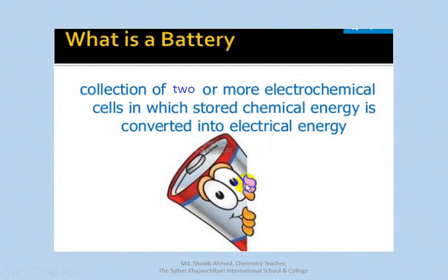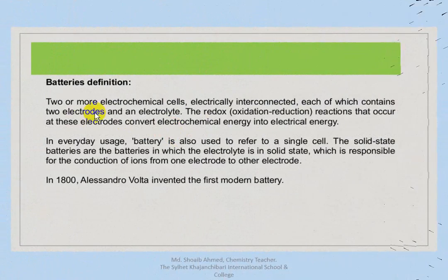First, let's look at the battery. A battery is a collection of two or more electrochemical cells, in which stored chemical energy is converted into electrical energy. These cells are electrically interconnected, each containing two electrodes and an electrolyte.